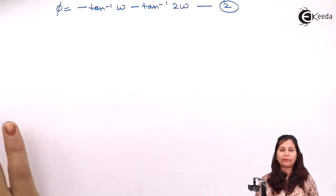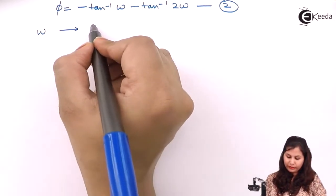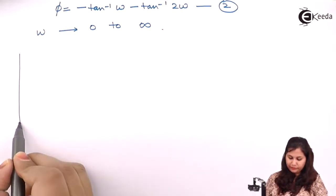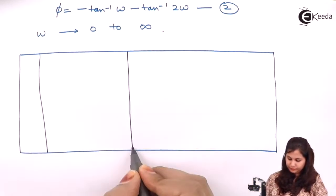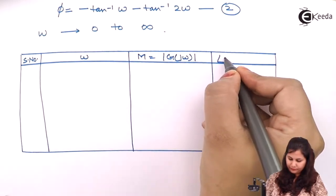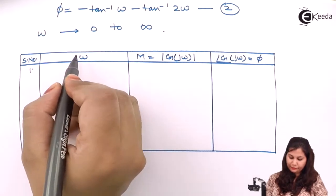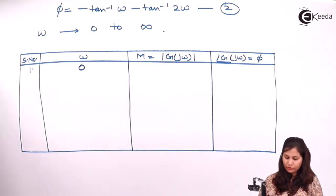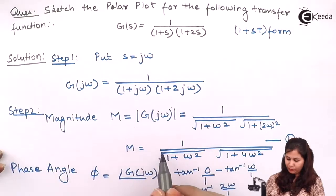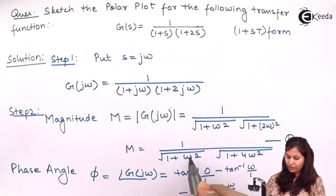We have to calculate the magnitude and the phase angle for different values of ω, varying from 0 to infinity. Let's form a table with columns for ω, magnitude, and phase angle. When ω = 0, the magnitude is 1/(√1 · √1) = 1.